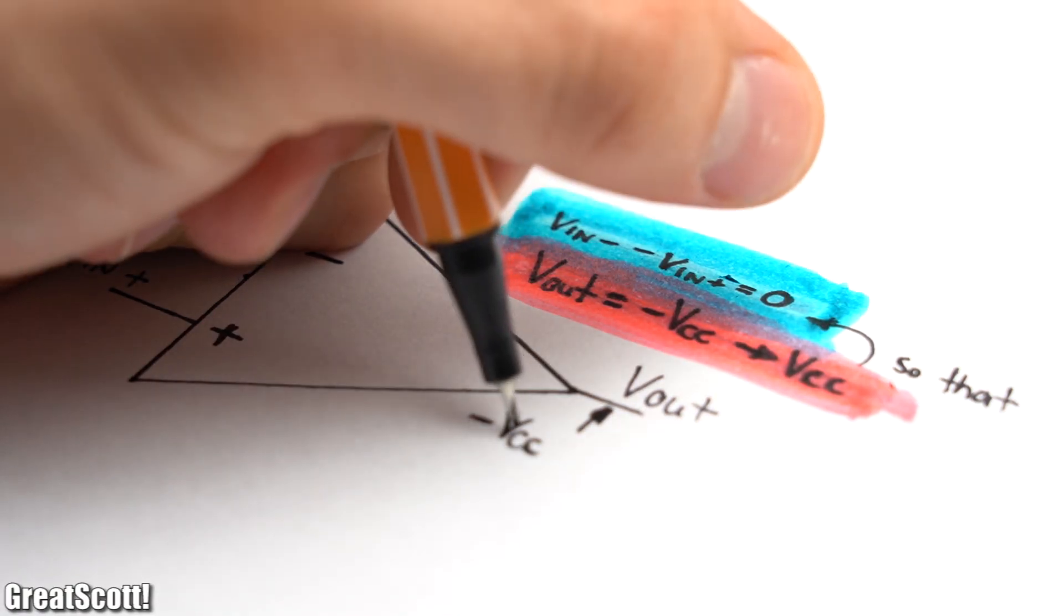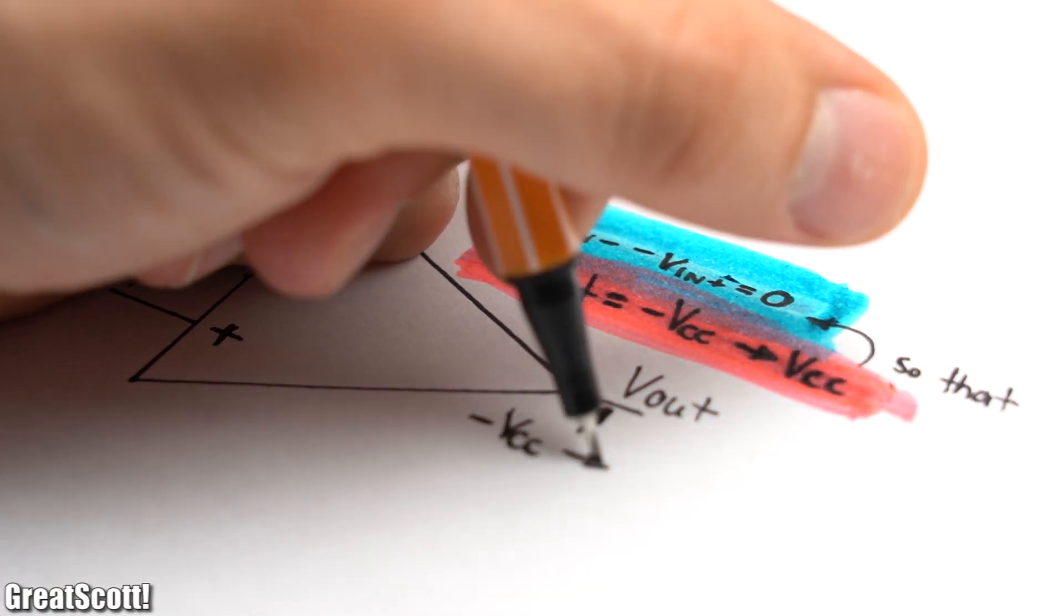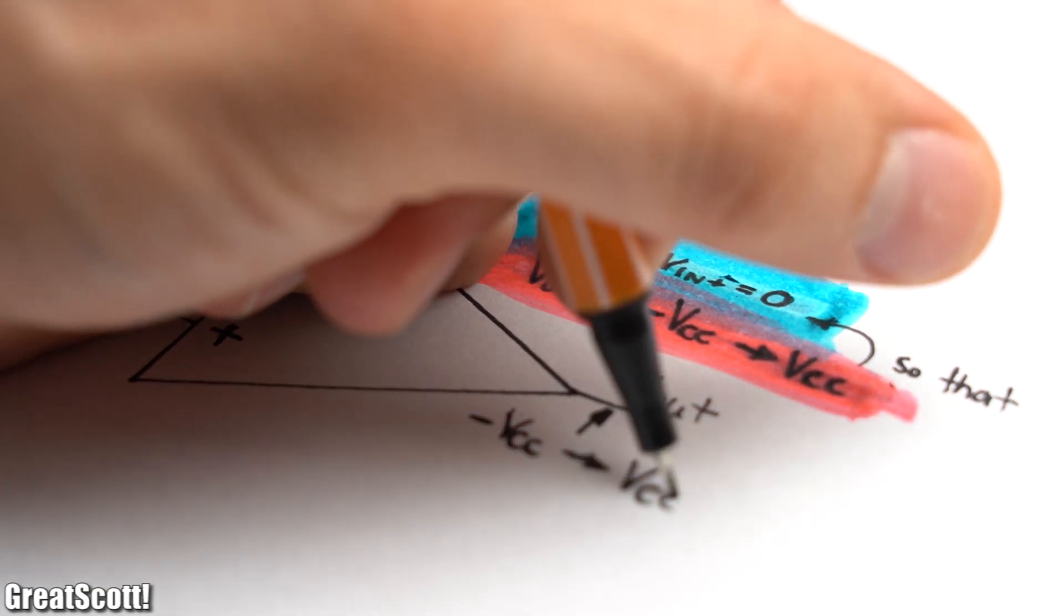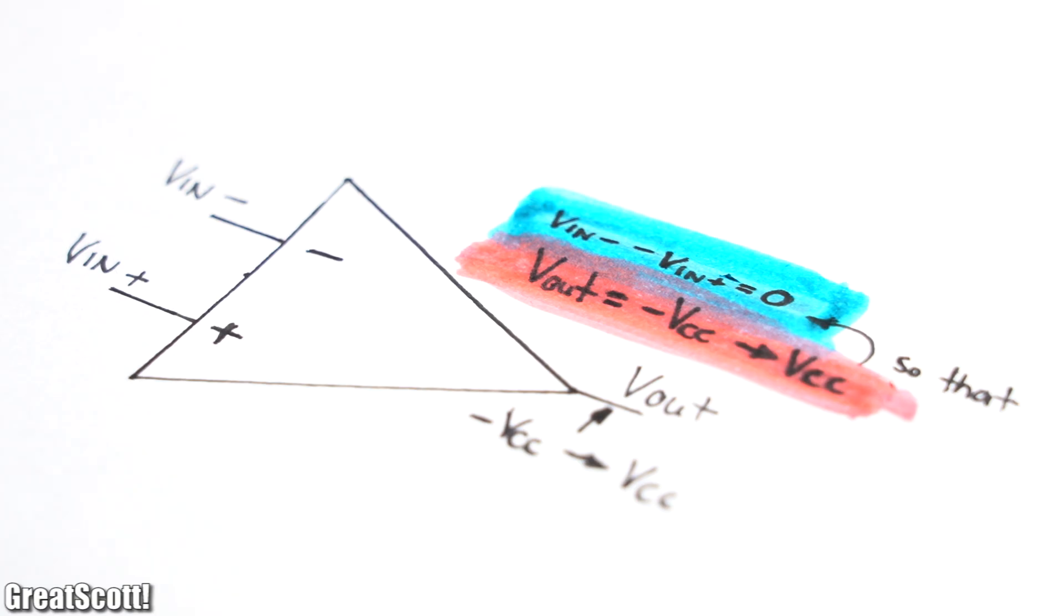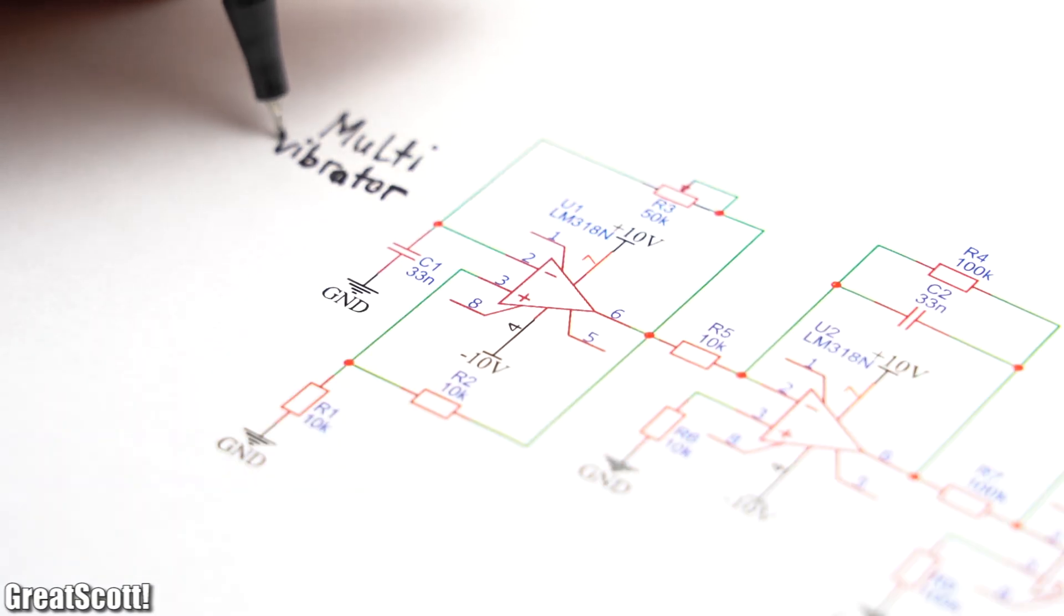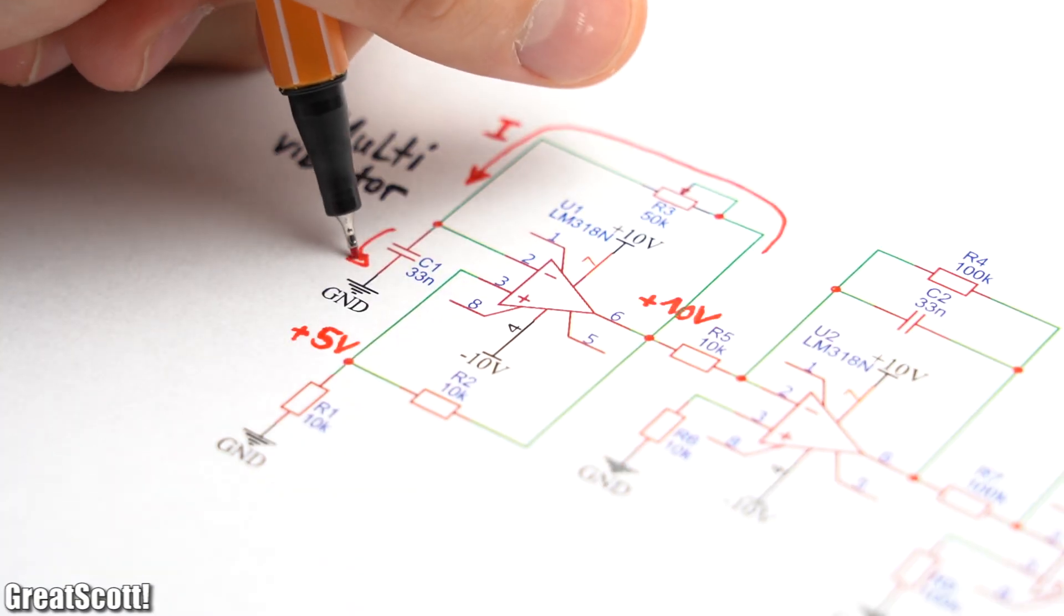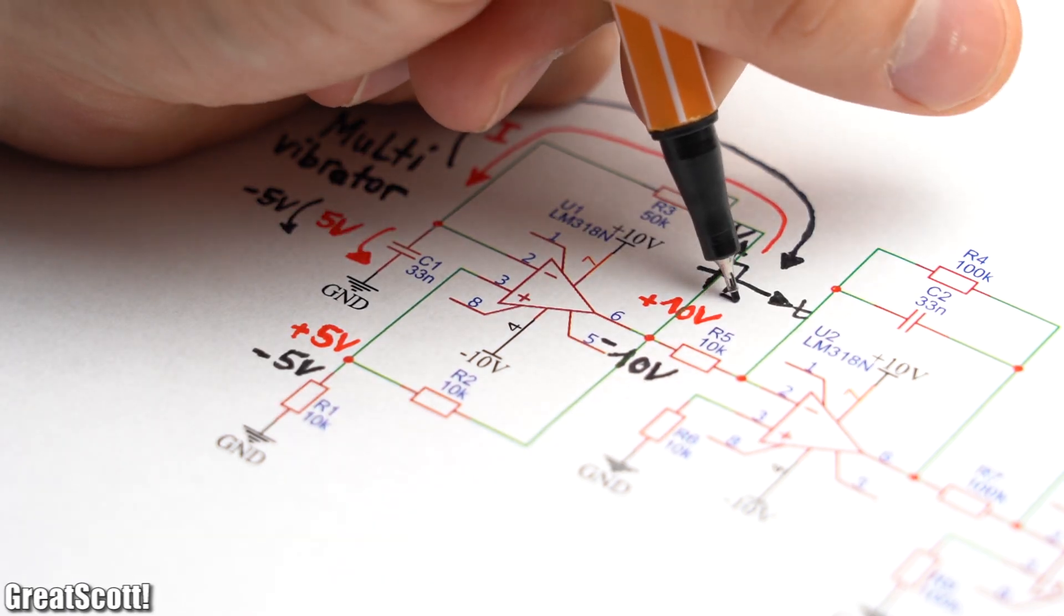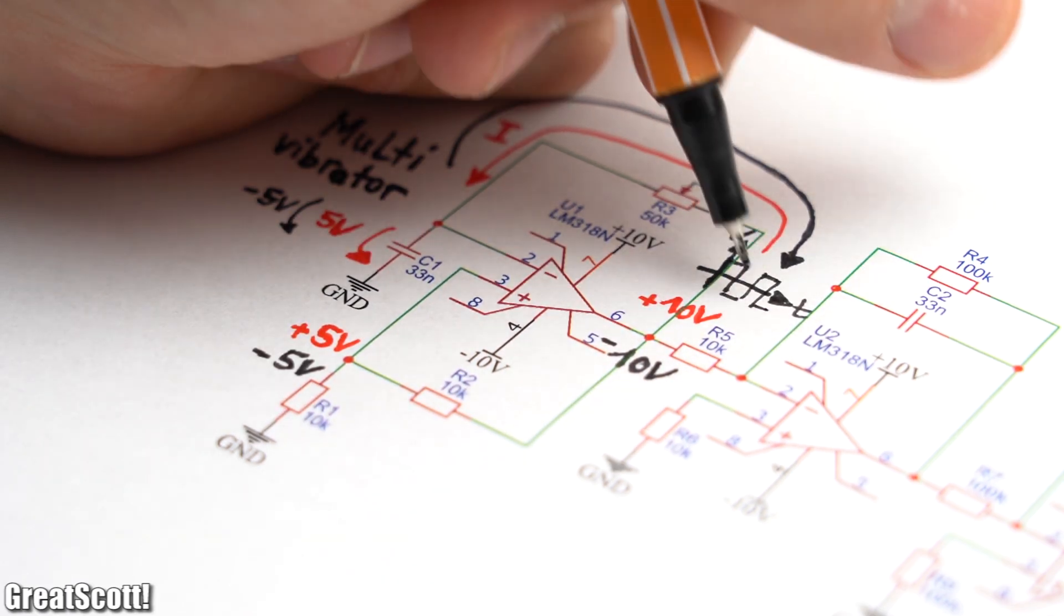The way this works is that an op-amp output will do anything in order to keep the different voltage between its inputs to zero volts. Thus at the first stage we got a multi-vibrator, which means the op-amp outputs will alternate between its high and low state to charge slash discharge the capacitor, so that it reaches the same voltage level as on the non-inverting inputs created by the voltage divider.